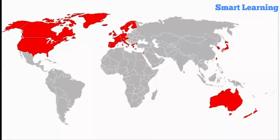As you can see in this map, the countries in blue are developed countries.